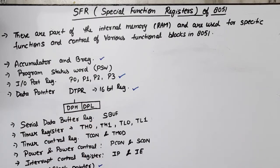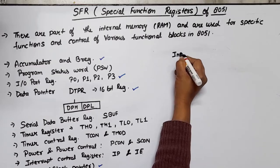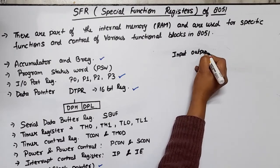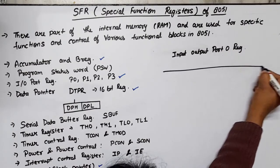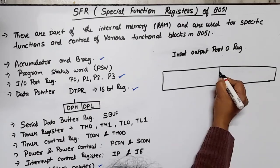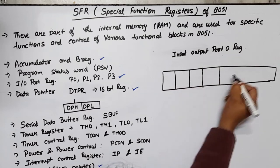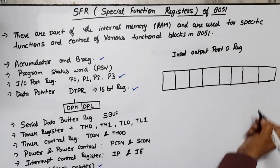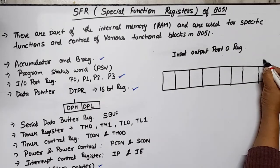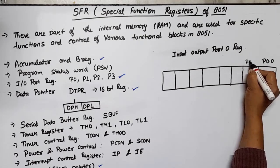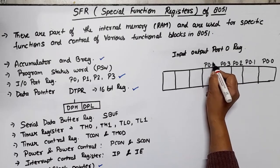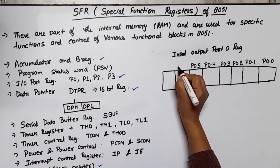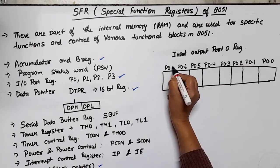Port 0 register is an 8-bit register. The 8 bits of Port 0 are P0.0, P0.1, P0.2, P0.3, P0.4, P0.5, P0.6, and P0.7.